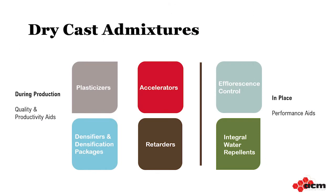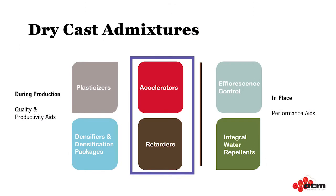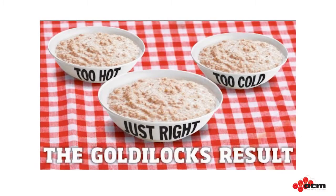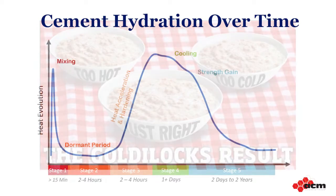Accelerators and Retarders. Another category of quality and production aids are accelerators and retarders. These products address flip sides of the same coin — the weather. Concrete is a bit like Goldilocks' porridge: it's no good if it's too hot or too cold. For cement to harden, it needs to hydrate, and the hydration reaction is sensitive to temperature.